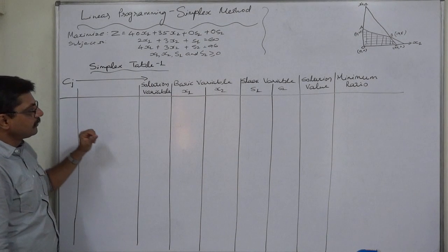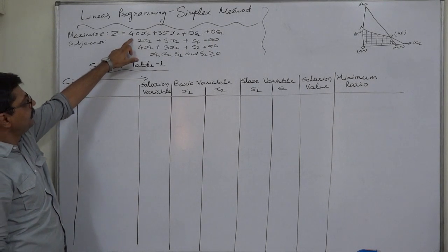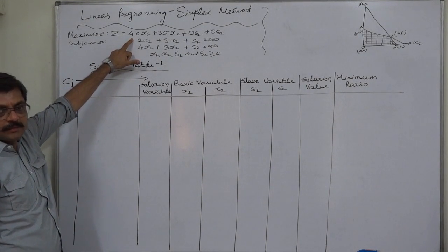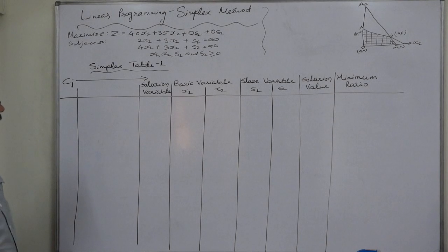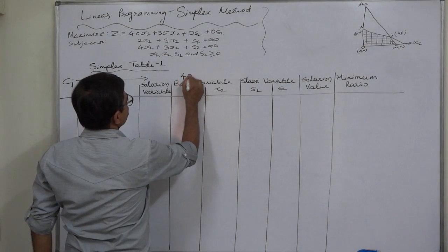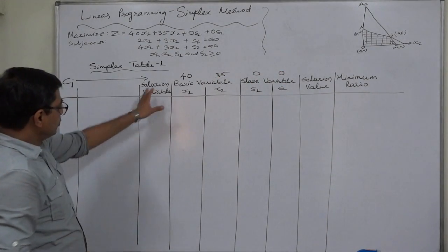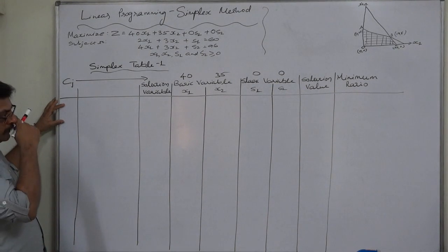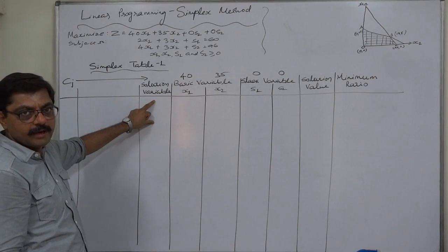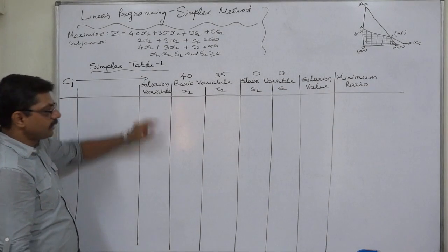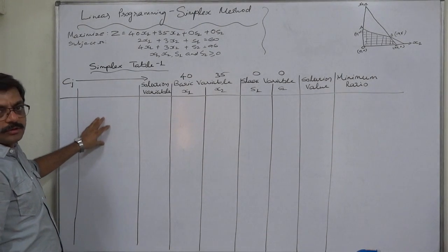This is the simplest format of a simplex table. CJ shows the coefficients of the variables in the Z function. Since we are also going to use ZJ, we are not using Z here. CJ is 40 for X1, 35 for X2, 0 for S1, and 0 for S2. The same coefficients will be written here also for the variables which are the solution variables or basic variables. This column will be for working notes.